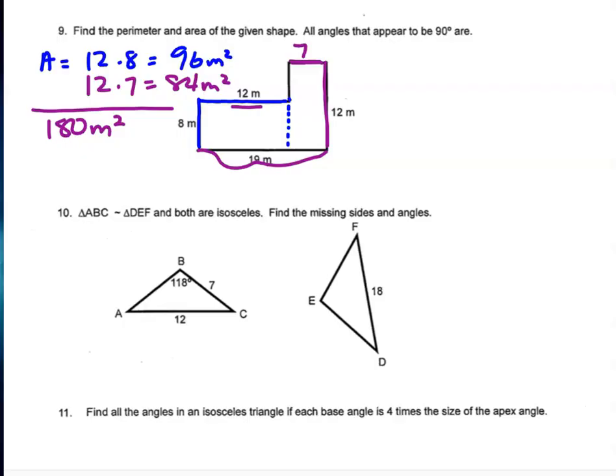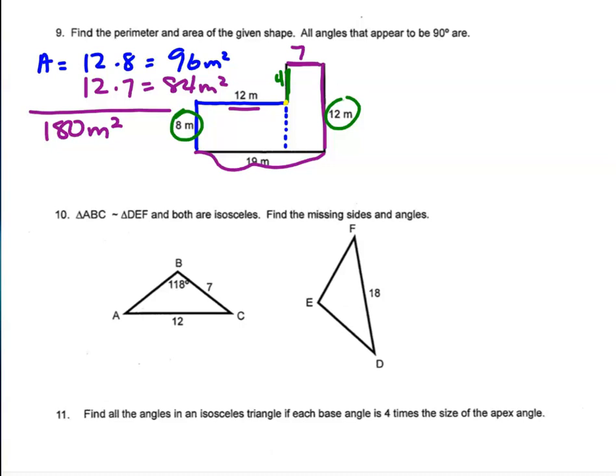For the perimeter, the whole vertical height is 12; we've used 8, so the remaining side is 4. Working around the shape: 12 + 8 + 19 + 12 + 7 + 4 = 62 meters.